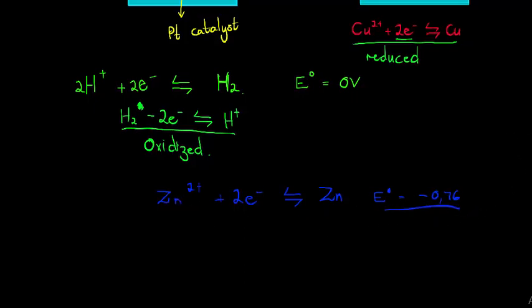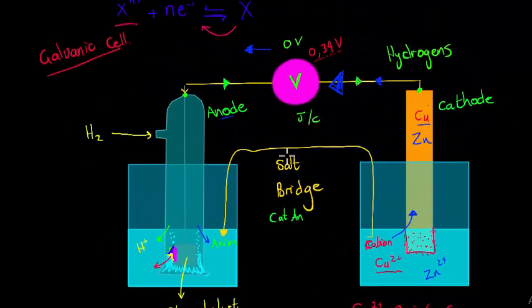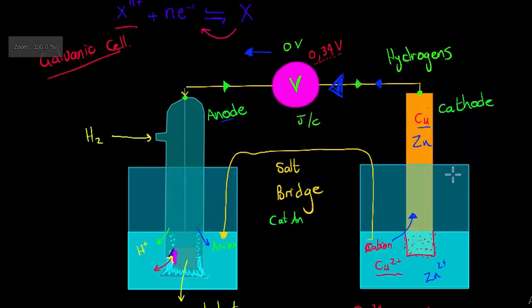The reading is positive (0.34 V) when electrons flow away from hydrogen toward the substance being compared, and negative (−0.76 V) when electrons flow toward hydrogen. In the next video we'll specifically look at a galvanic cell using copper and zinc together, and determine the theoretical voltmeter reading from their standard reduction potentials. Thank you for watching this video on standard reduction potential.